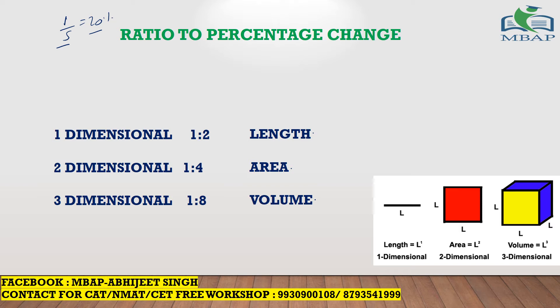Understand this: length is a one-dimensional figure. Area is always two-dimensional — for example, area of a rectangle is length times breadth, so L and B give two dimensions. Volume on the other hand is always three-dimensional — the volume of a cuboid is L times B times H, length times breadth times height, so there are three dimensions.